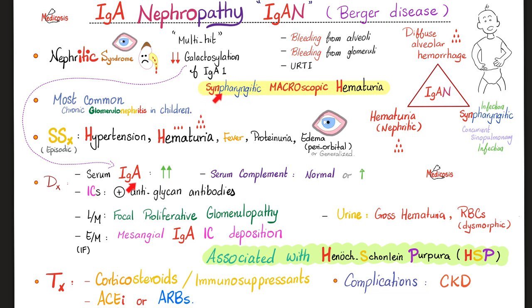Synpharyngitic because it happens at the same time as the pharyngitis, and it's macroscopic hematuria. IgA nephropathy is the most common chronic glomerulonephritis in children. Symptoms include episodic attacks: every time you have pharyngitis, you have blood in the urine. Episodes include paroxysmal hypertension, hematuria, fever, and proteinuria. Don't forget periorbital puffiness. IgA levels are high in the serum. Serum complement is normal or elevated — unlike many other nephritic and nephrotic diseases where you have hypocomplementemia from consumption.